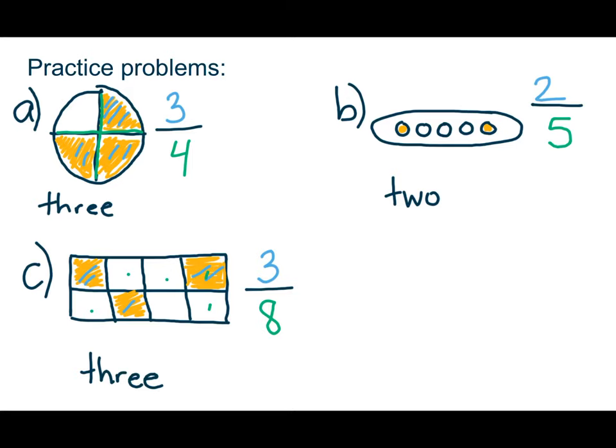And then the second part of the fraction is describing the denominator or the number of pieces there are. So it's three fourths. This has been divided into fourths. This has been divided into fifths. And this has been divided into eighths.